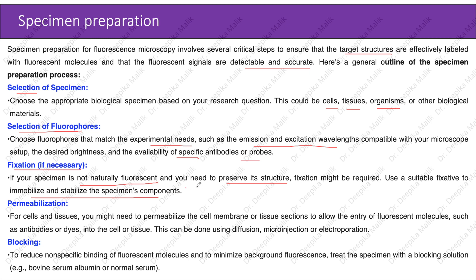Fixation: if your specimen is not naturally fluorescent and you need to preserve its structure, fixation may be required. Use a suitable fixative to immobilize and stabilize the specimen's components. Common fixatives include formaldehyde or formalin, ethanol, or methanol. Permeabilization: for cells and tissues, you may need to permeabilize the cell membrane to allow entry of fluorescent molecules. Blocking: treat the specimen with a blocking solution such as BSA or normal serum to reduce non-specific binding and background fluorescence.